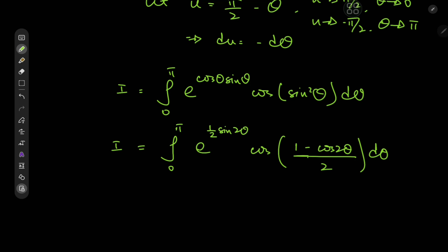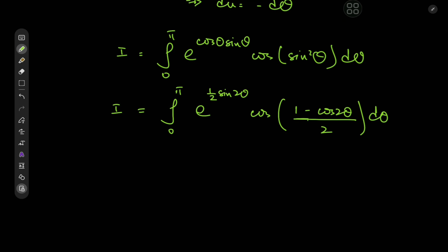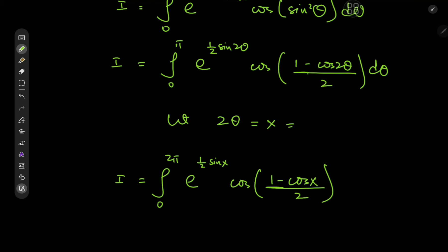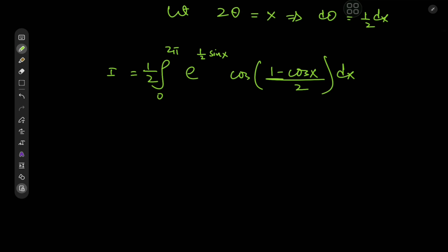Now for one last transformation — let's rename the dummy variable back to x. We let 2θ equal x, so as θ approaches 0, x approaches 0, and as θ approaches π, x approaches 2π. So i is now the integral from 0 to 2π of e to the one half sine x times the cosine of (1 minus cosine x) divided by 2, with the differential transforming as dθ equals one half dx — giving us a factor of one half outside.